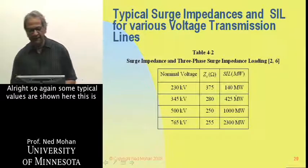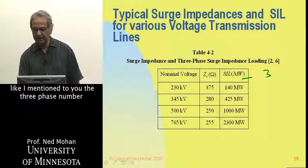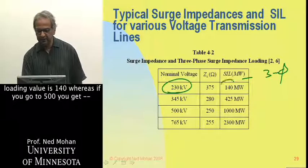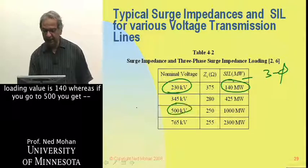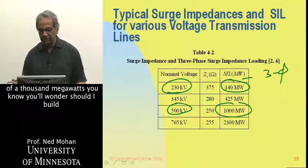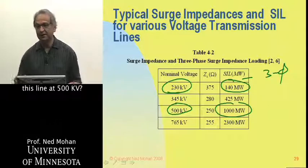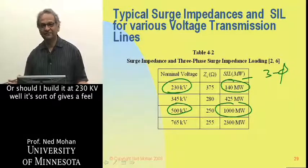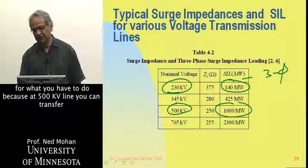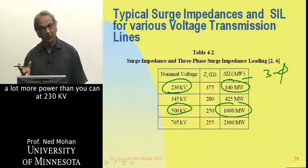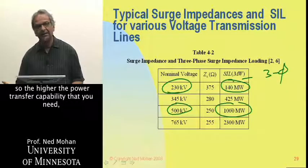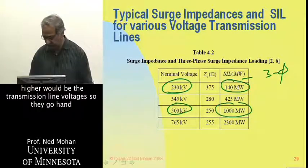All right, so again, some typical values are shown here. This is, like I mentioned to you, is a three-phase number. And you can see that if you have 230 kV line, the surge impedance loading value is 140, whereas if you go to 500, you go to 1,000 megawatts. So if you have to transfer 1,000 megawatts, you'll wonder, should I build this line at 500 kV or should I build it at 230 kV? Well, it sort of gives a feel for what you have to do because at 500 kV line, you can transfer a lot more power than you can at 230 kV. So the higher the power transfer capability that you need, higher would be the transmission line voltages. So they go hand in hand.